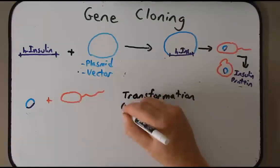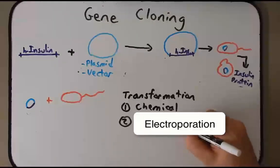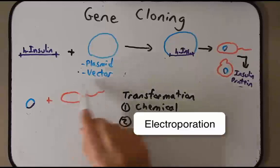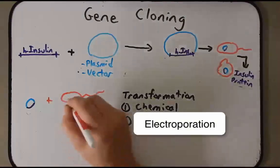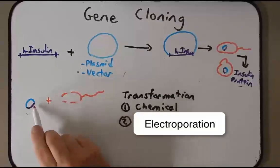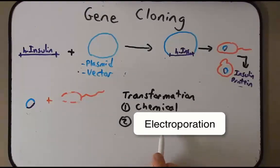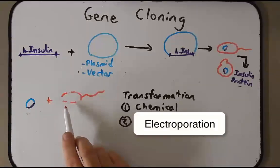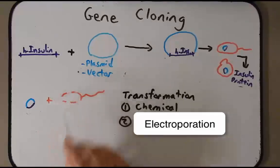There are two general ways to do this — one is a chemical way, and one is an electrical way called electroporation. The chemical method involves treating the E. coli cells with various chemicals to make the bacterial cell permeable, allowing the plasmid to transfer inside. Electroporation is very similar, but instead of using chemicals, we zap it with electricity, which opens up the cell wall and allows the DNA to move in. Either method results in E. coli with the plasmid containing insulin inside of it.